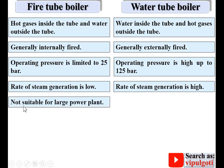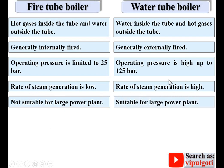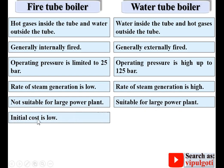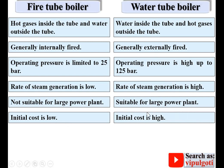A fire tube boiler is not suitable for large power plants because steam generation is low. In a water tube boiler, steam generation is high and so it is suitable for large power plants. Initial cost is low for fire tube boilers because pressure is up to 25 bar, whereas initial cost is high for water tube boilers because they are suitable for large power plants.